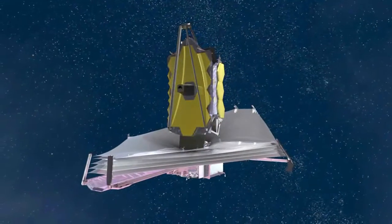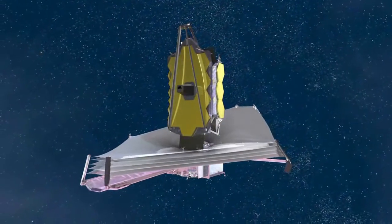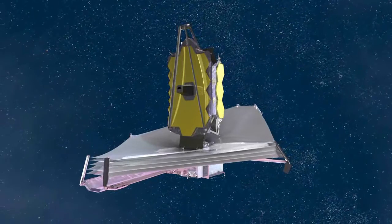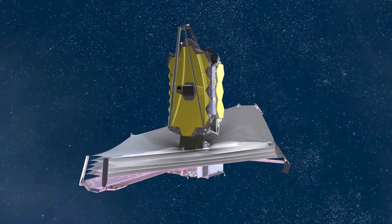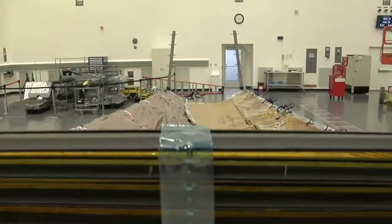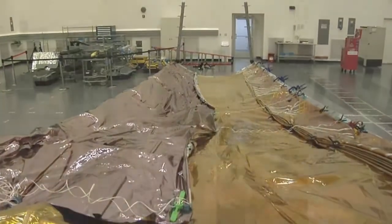At Northrop Grumman Aerospace Systems in Redondo Beach, California, Webb's sunshield, designed to keep the telescope's optics cold and to prevent extraneous light from entering the optical train, is being evaluated using a full-scale test article.